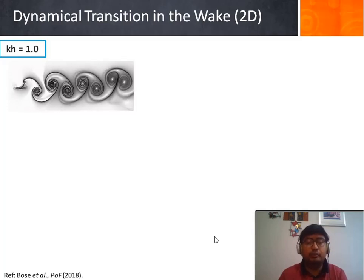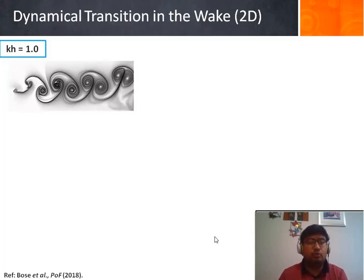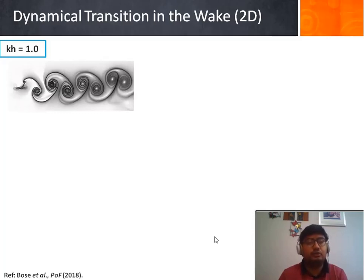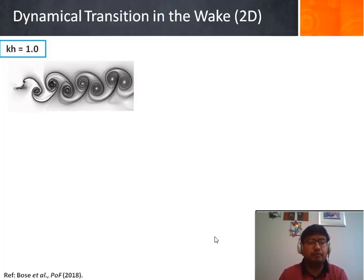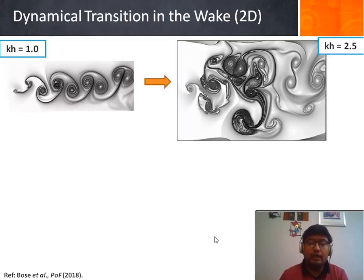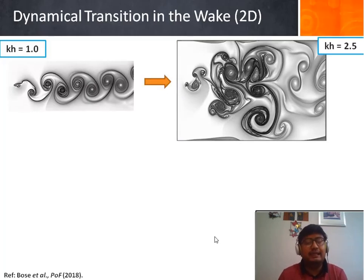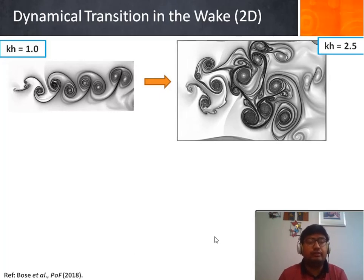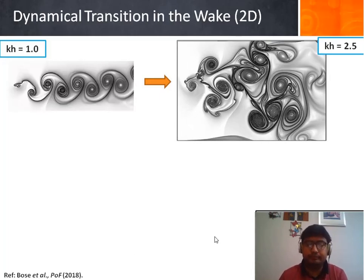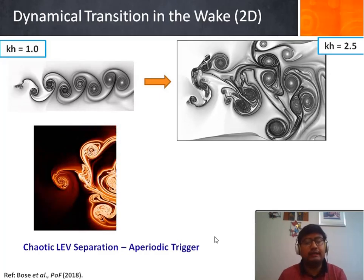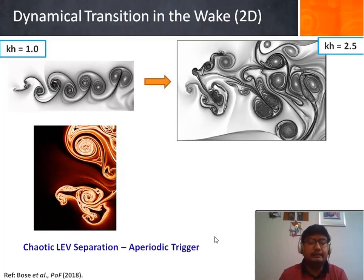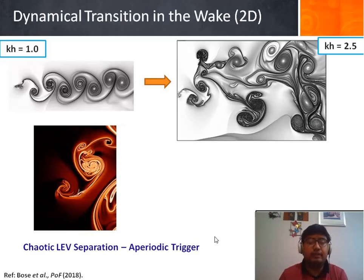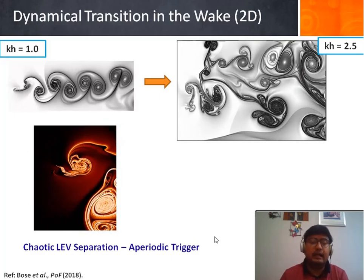In our earlier studies, we have shown that as we increase this non-dimensional plunge velocity from 1 to 2.5, we see an interesting chaotic transition from a periodic reverse von Karman wake. We have also identified that the leading edge separation plays a key role in introducing the very fast aperiodic trigger in the unsteady flow field.